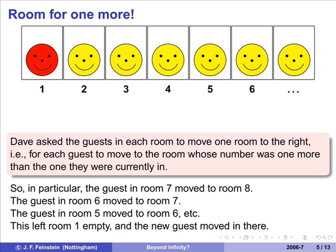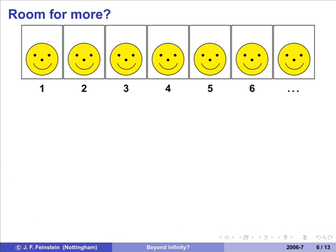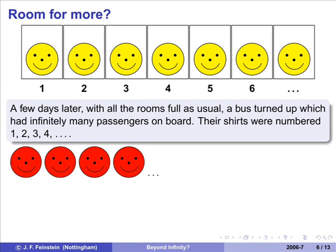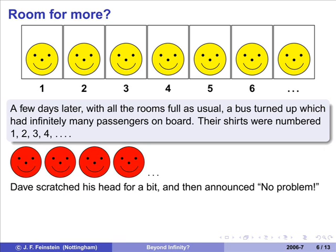Okay, that was easy. Problem is that next week, or a few days later, a bus turned up which had got infinitely many passengers on. The passengers were numbered one, two, three, four. But Dave thought, for a moment, well, could try moving everybody one to the right, I can fit one in, move everybody to the right again, fit another one in. But I'll never get anywhere that way, because I'll only ever get finitely many in. Let's see how you get infinitely many people in.